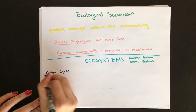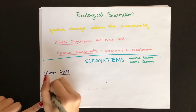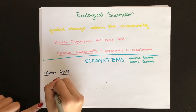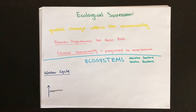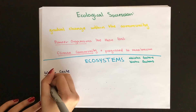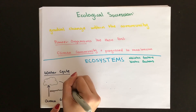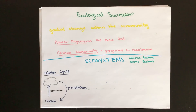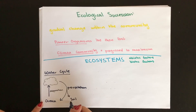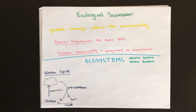Most of the water on Earth is found in oceans. Most of it is taken into clouds via evaporation and transpiration, and it returns to the ocean via precipitation. Water in the soil goes back to the oceans through runoff. That's the basic water cycle.